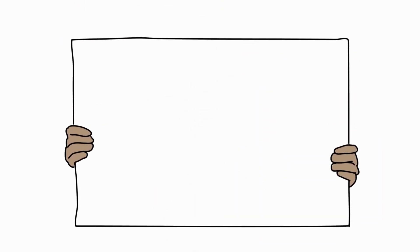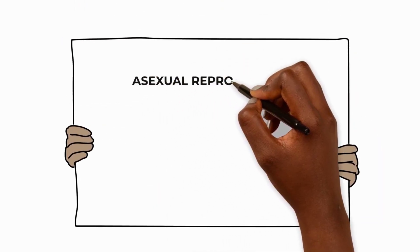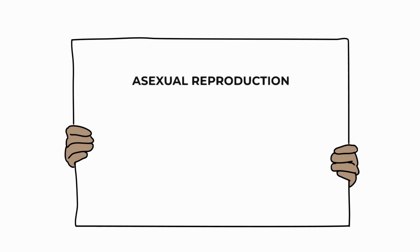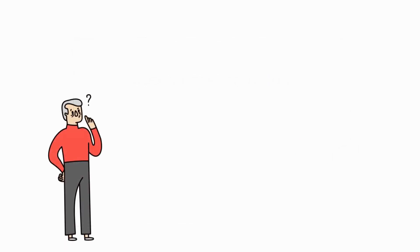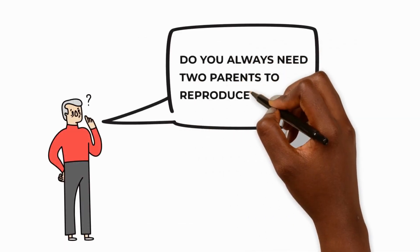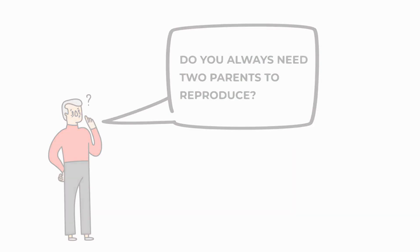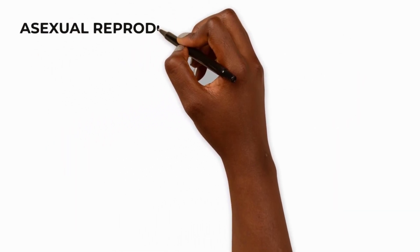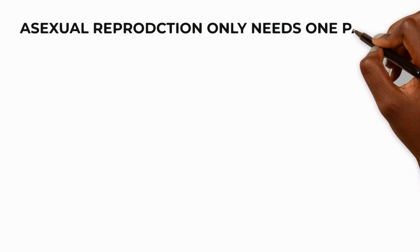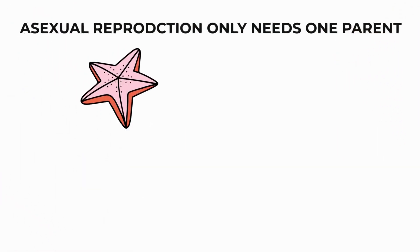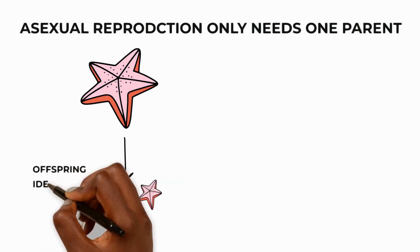There's also another type of reproduction called asexual reproduction. So, do you always need two parents to reproduce? It may surprise you to know that some animals can reproduce on their own through the process of asexual reproduction. This means they produce identical offspring, without the need for a mate.